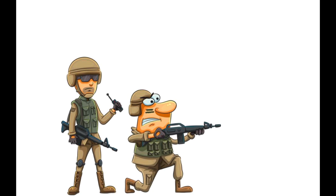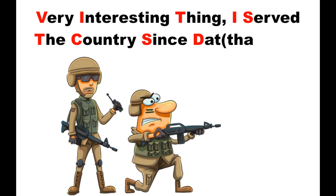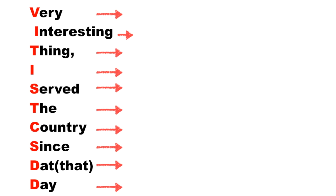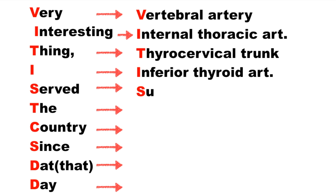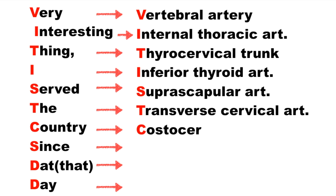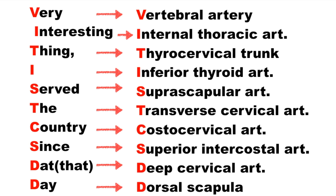Here is another mnemonic to remember all those branches and sub-branches. The mnemonic is 'Very Interesting Thing I Solved The Country Since That Day' — observe the red letters. V for vertebral artery, I for internal thoracic artery, T for thyrocervical trunk, I for inferior thyroid artery, S for suprascapular artery, T for transverse cervical artery, C for costocervical artery, S for superior intercostal artery, D for deep cervical artery, and the last D for dorsal scapular artery.